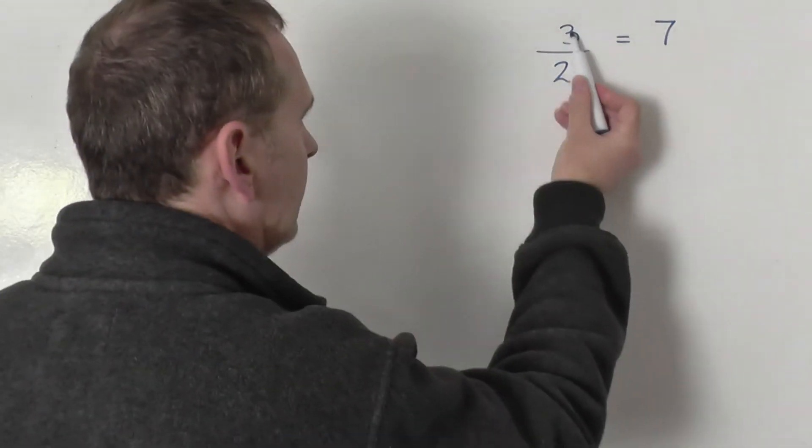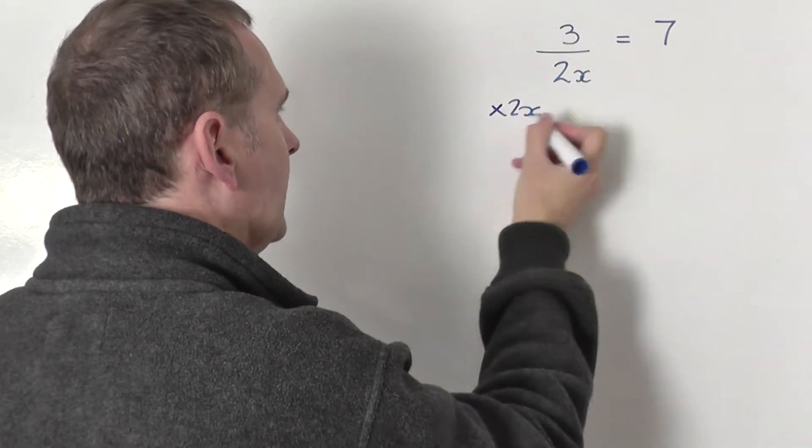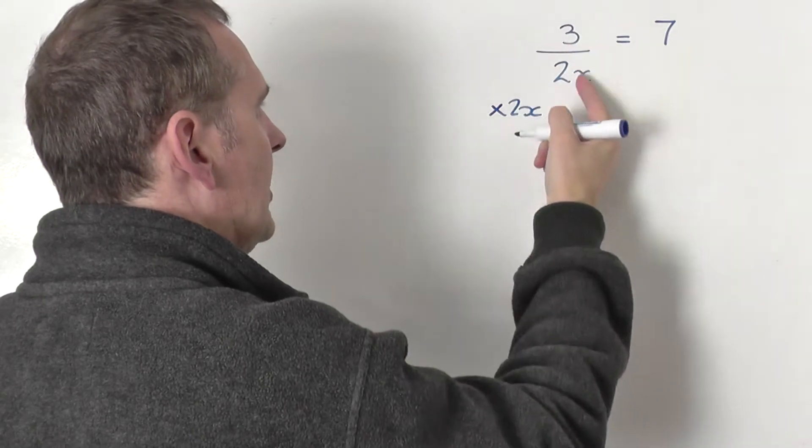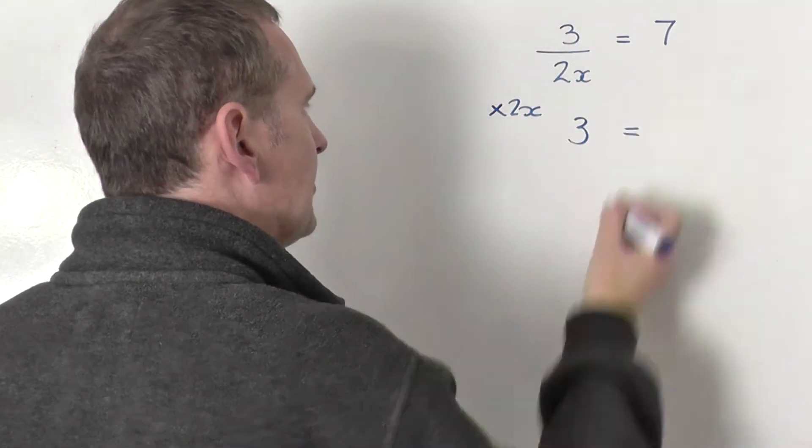So what I'm going to do is take the 3 which is shared by 2x and I'm going to multiply it by 2x. 3 is shared by 2x, multiplied by 2x, you just get the number 3.